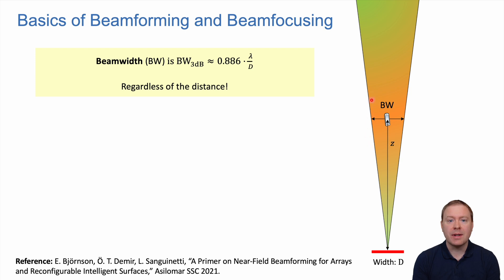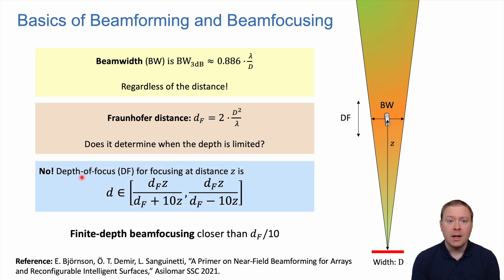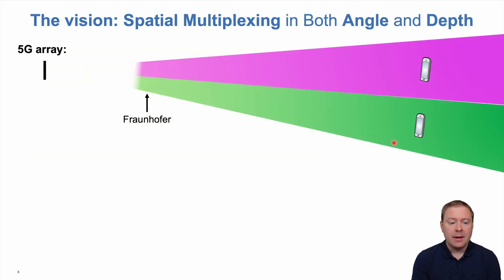We're interested in beam focusing, whether we can have a finite depth in the distance domain. In these cases, people talk about the radiative near field and the Fraunhofer distance, which is 2 times the aperture length squared divided by the wavelength. The 3dB beam focus range depends on the Fraunhofer distance. The upper limit becomes positive and finite when the distance to the user is smaller than the Fraunhofer distance divided by 10. In these cases, we have a beam with finite width and depth, which is beam focusing that can be used for spatial multiplexing in both angle and depth.